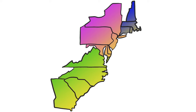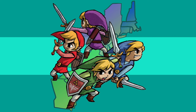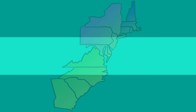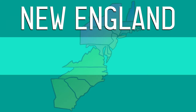The 13 colonies are divided into three regions. Each region has its own personality, its own way of doing things, of making money, and even its own religious faiths. All of these differences between the regions are what we need to learn for this unit. The three regions are New England, Middle, and Southern colonies. So let's take a closer look.